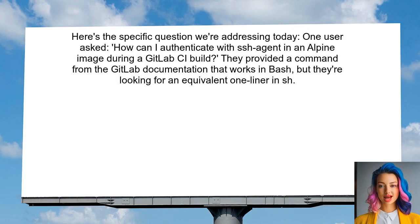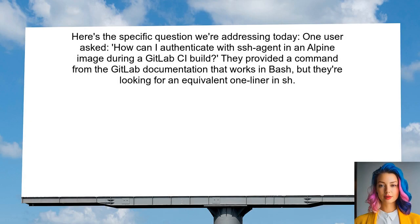Here's the specific question we're addressing today. One user asked: how can I authenticate with SSH Agent in an Alpine image during a GitLab CI build? They provided a command from the GitLab documentation that works in Bash, but they're looking for an equivalent one-liner in SH. Sound familiar? Let's dive in.